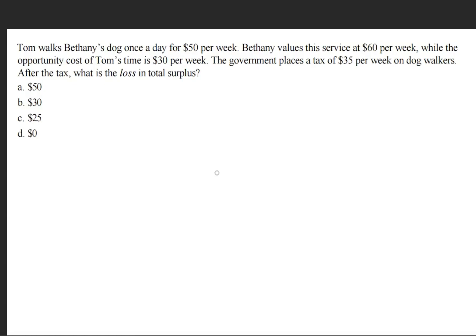So the question asks, Tom walks Bethany's dog once a day for $50 per week. Bethany values the service at $60 per week, while the opportunity cost of Tom's time is $30 per week. The government places a tax of $35 per week on dog walkers. After the tax, what is the loss in total surplus?